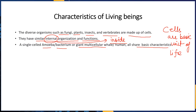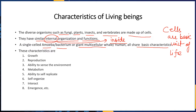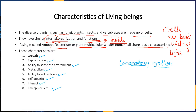But there are some exceptions. The characteristics of living beings include growth, reproduction, ability to sense the environment, metabolism, ability to self-replicate, self-organization, interaction, and emergence. All living organisms exhibit locomotory motion — that is, they are able to move. Animals are able to move because they possess specialized locomotory organs.